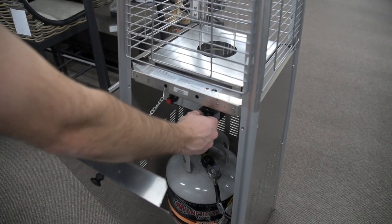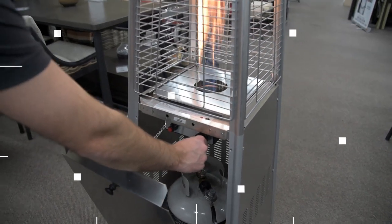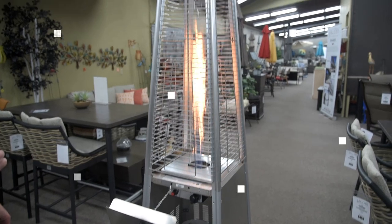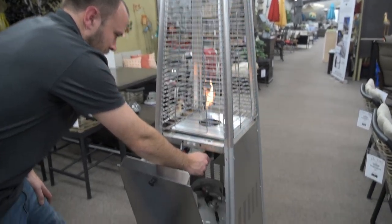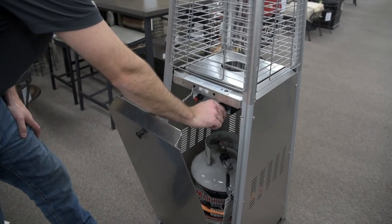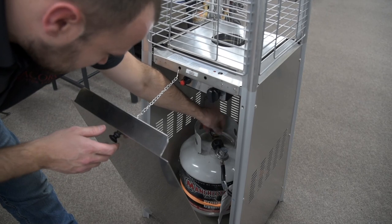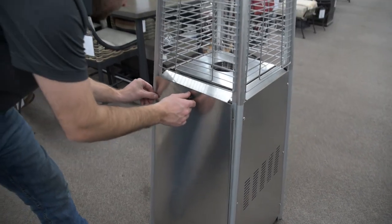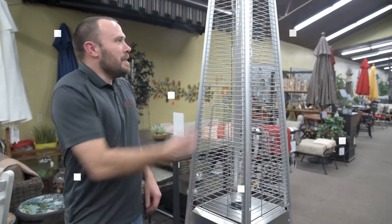You can then take your knob and increase your flame. I'm going to go ahead and turn it off here. Turn my tank off. Close up the door. That's a simple how-to on lighting a pyramid heater.